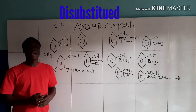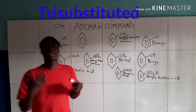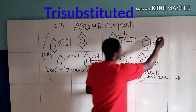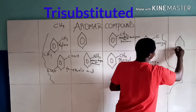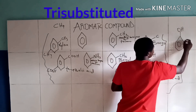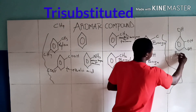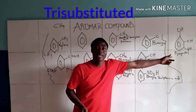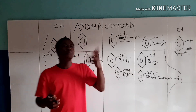Now talking about trisubstituted benzene derivatives, when we have three OH groups on a benzene ring, the compound is called pyrogallol. This is an example of a trisubstituted benzene derivative.